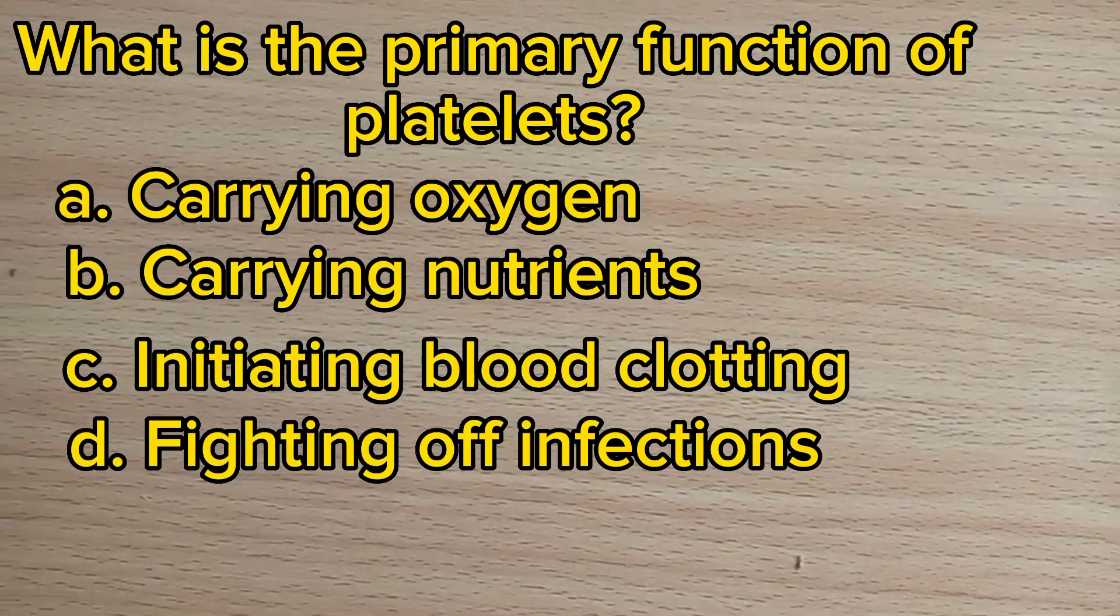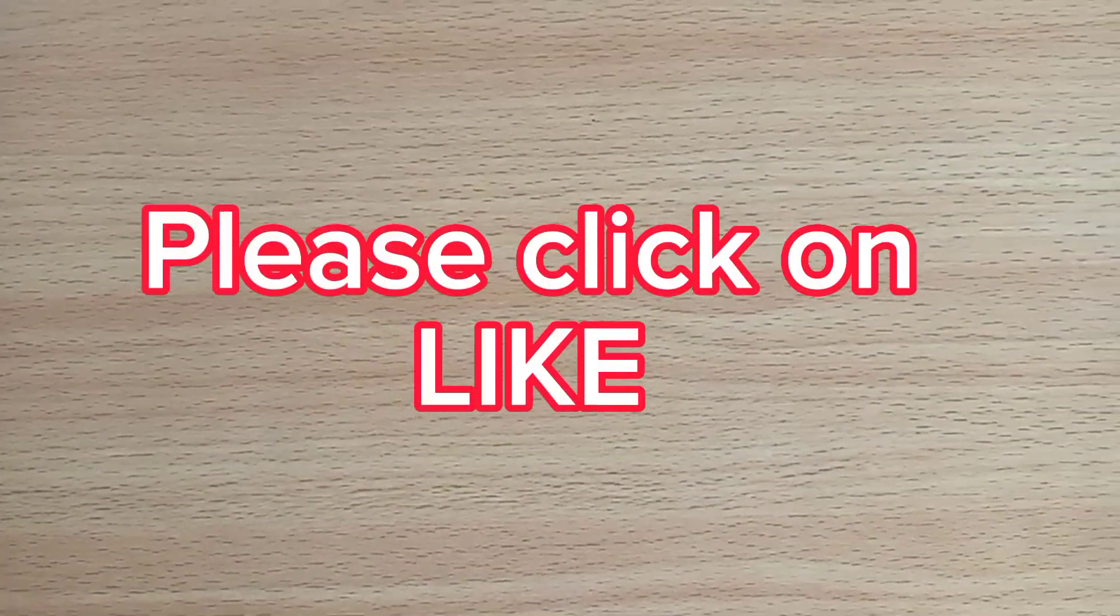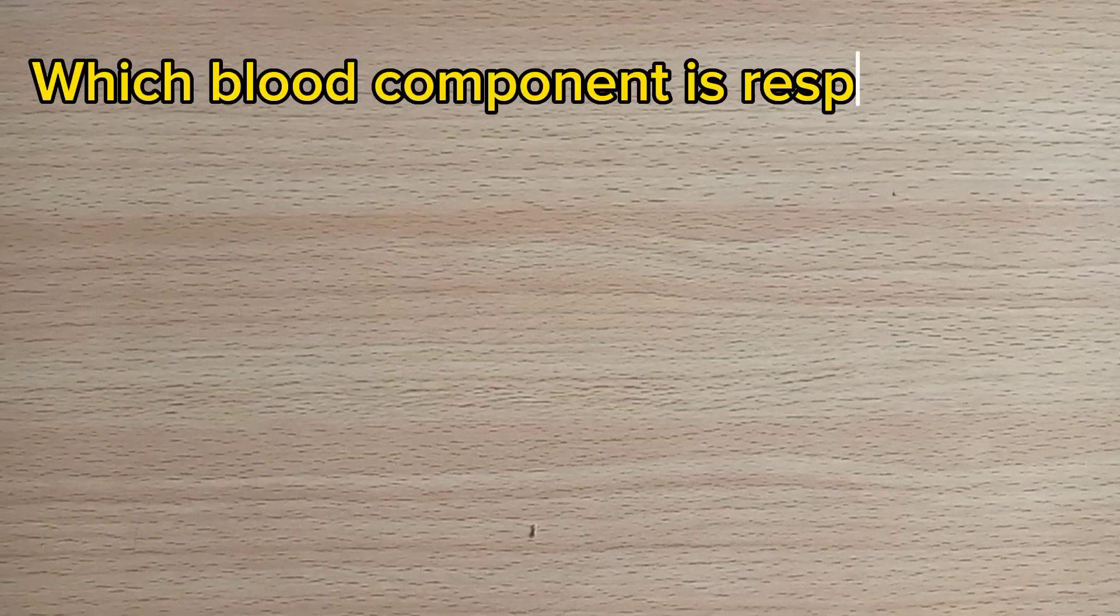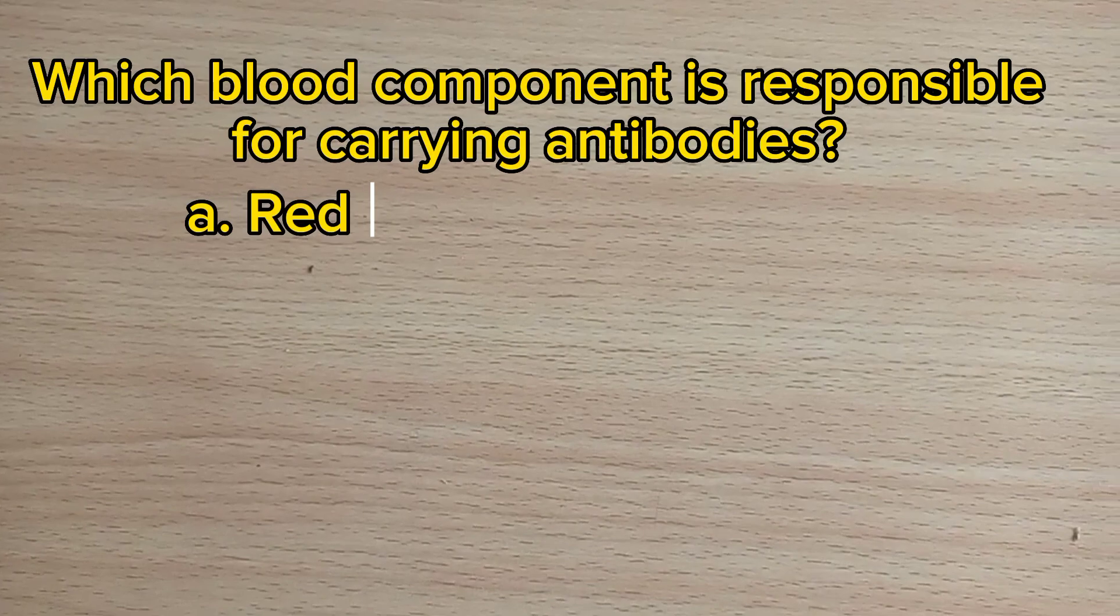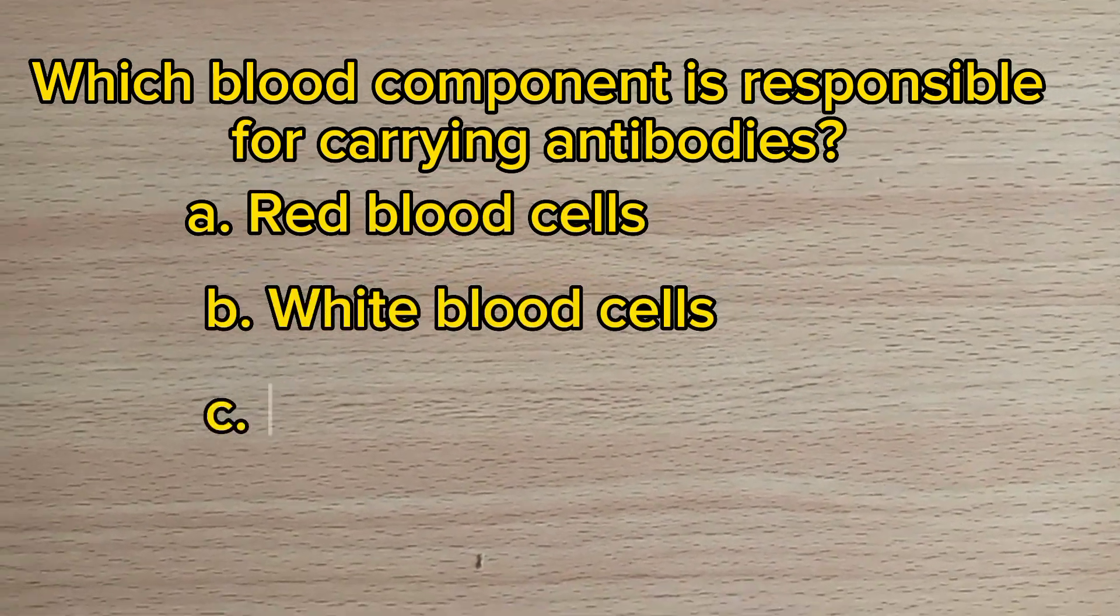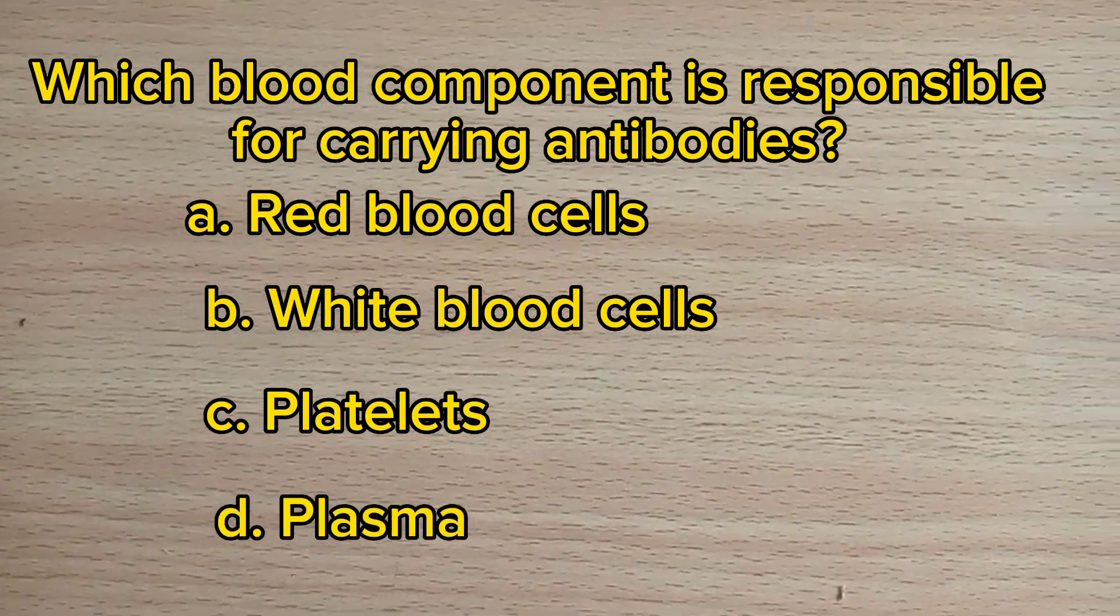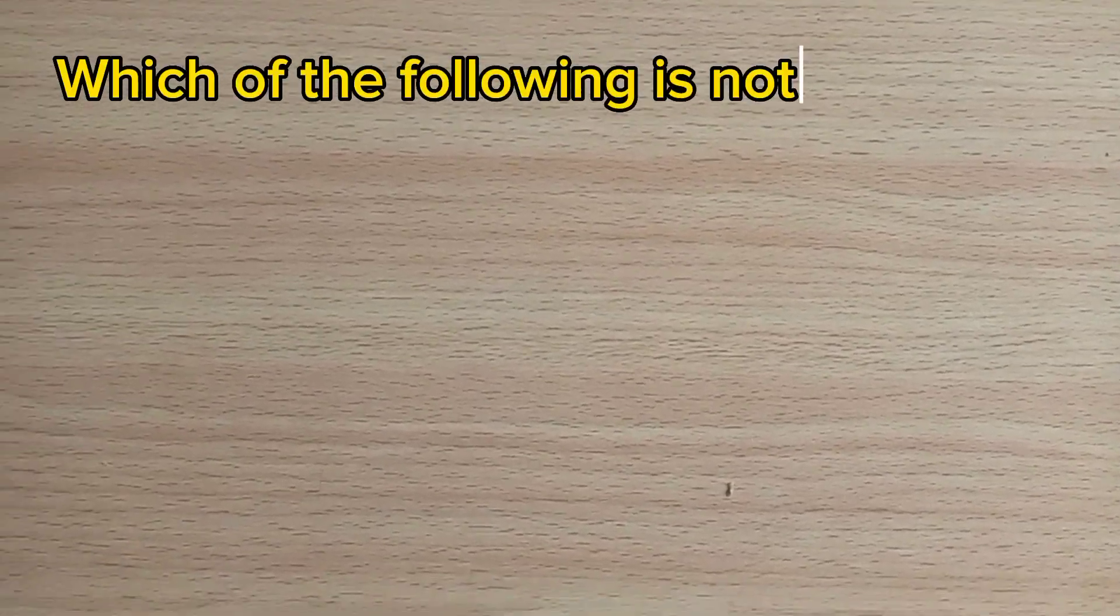Number seventeen: What is the primary function of platelets? A. Carrying oxygen, B. Carrying nutrients, C. Initiating blood clotting, D. Fighting off infections. The answer is C, initiating blood clotting. Number eighteen: Which blood component is responsible for carrying antibodies? A. Red blood cells, B. White blood cells, C. Platelets, D. Plasma. The answer is D, plasma.